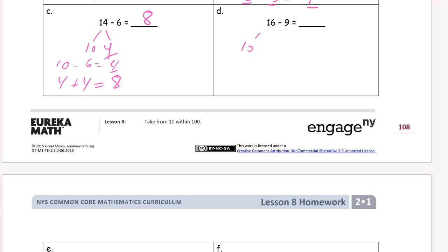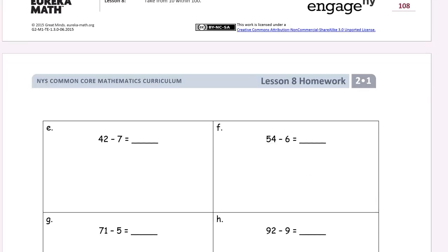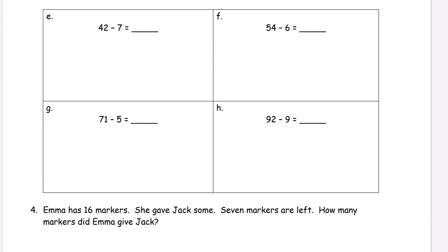Take out a 10. 10 and 6. Take the 9 from the 10. 10 minus 9. 1 left. Don't forget the 6, we've got to add that back in. 7 left. Now numbers are getting a little bit bigger.